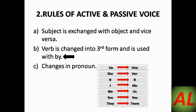The next rule is about the verb. The verb can be in any of its three forms in an active voice sentence — for example, 'break' (1st form), 'broke' (2nd form), 'broken' (3rd form). When changed into passive voice, the verb will always come as the third form. We will always add 'by' with the third form — for example, 'taken by,' 'broken by,' 'driven by.'